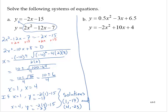Let's look at the second system: y equals 0.5x squared minus 3x plus 6.5, and y equals negative 2x squared plus 10x plus 4. Again, I'm going to use substitution. So I have negative 2x squared plus 10x plus 4 equals 0.5x squared minus 3x plus 6.5. Bringing everything to one side: subtracting 0.5x squared gives negative 2.5x squared, adding 3x gives plus 13x, and subtracting 6.5 gives negative 2.5, all equals 0.